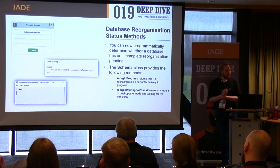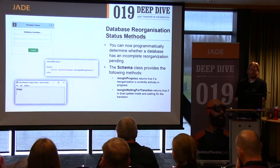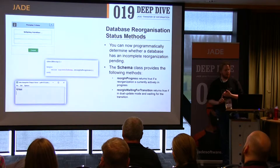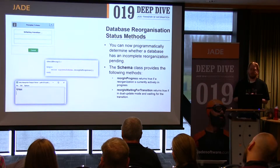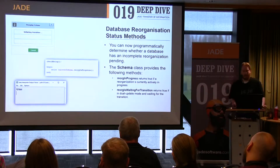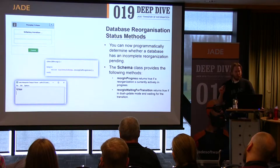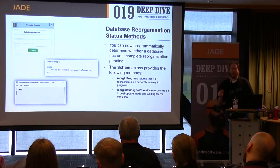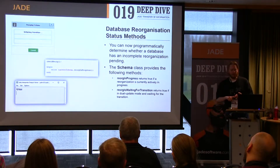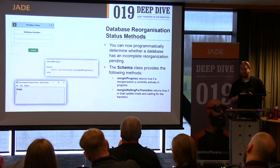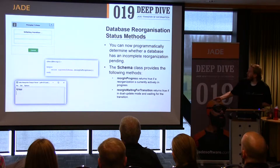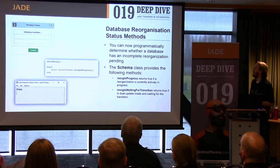Next: database reorganization status method. It's a pretty simple one. There's a method called reorg in progress — if you call that, it returns a boolean telling you whether a reorg is currently in progress, programmatically. There's also another method, reorg is waiting for transition, which returns true if and only if you're in dual update mode and waiting for a transition.